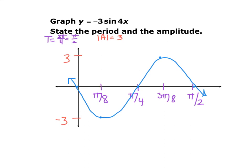All x-coordinates are divided by 4, giving new x-coordinates for the anchor points. The negative out in front reflects the graph across the x-axis, so instead of starting up, it starts down. Any number multiplied out in front affects your amplitude and range. Any number multiplied by x affects your period. If you have a negative, sine starts down instead of up, and cosine starts low instead of high.